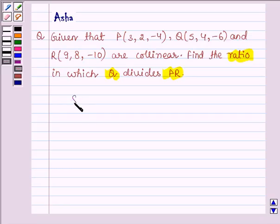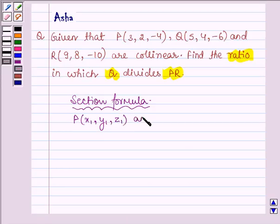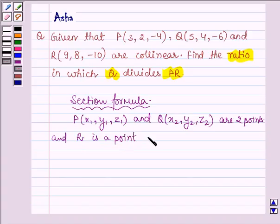Now, first let us learn the section formula with the help of which we shall be solving the above problem. It says, if P with coordinates x1, y1, z1 and Q with coordinates x2, y2, z2 are two points, and R is a point which divides PQ